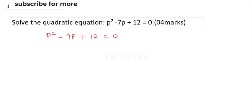First of all, you need to call this the first term, this is the second term, and this is the third term. So we are going to look for our sum, which is equal to our second term, which is minus 7p. We are going to look for the product, which is our first times our third term, which is going to give us 12p squared.